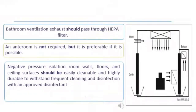In this type of room, the bathroom ventilation exhaust should pass through the HEPA filter. An anteroom is not required but is preferred or recommended if possible. Negative pressure isolation room walls, floors, and ceiling surfaces should be easily cleanable and highly durable to withstand frequent cleaning and disinfection processes with an approved disinfectant.